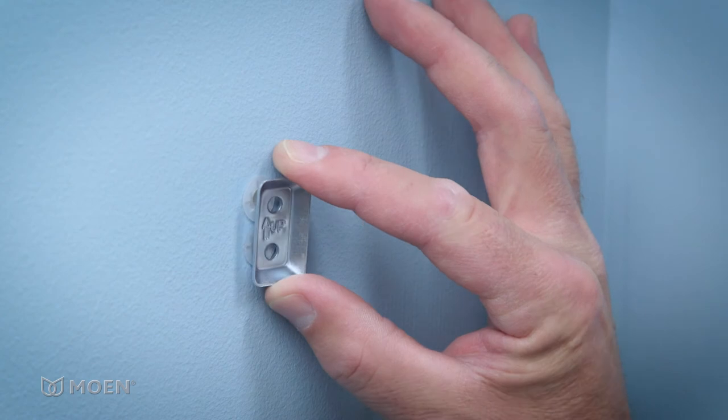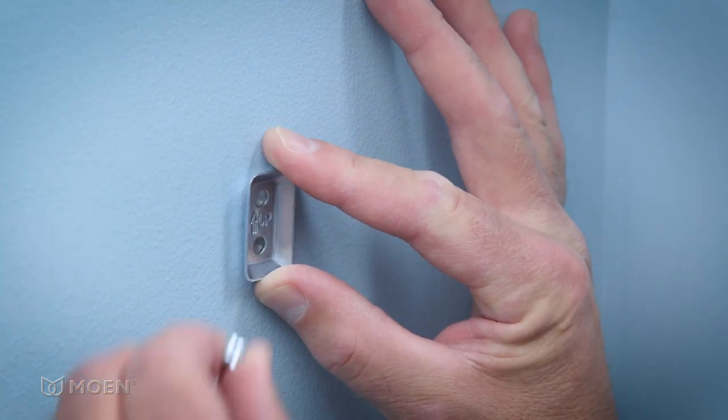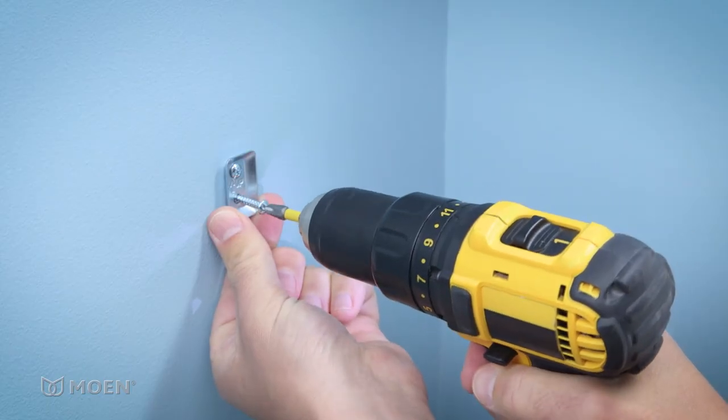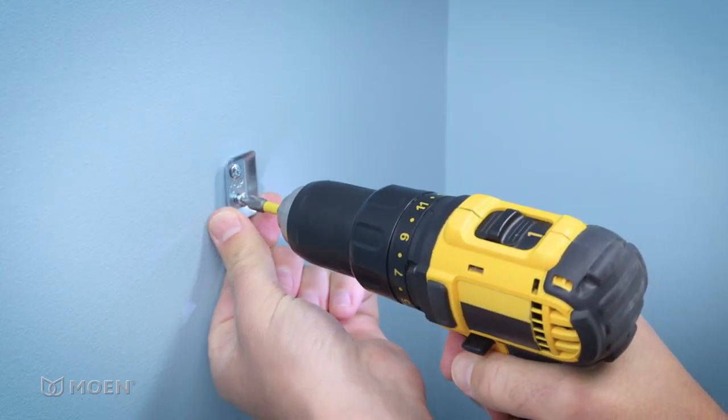Position each mounting plate over the holes. The arrow should be facing upwards. Thread the included screws until tight. Be careful not to over-tighten.